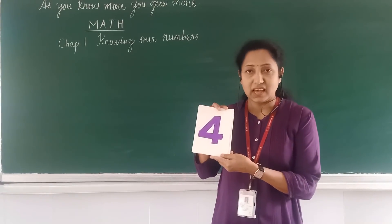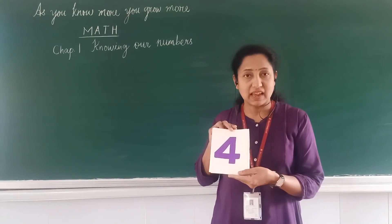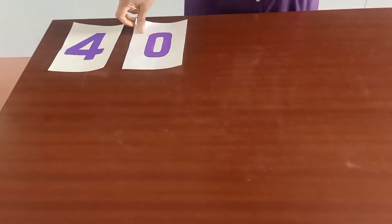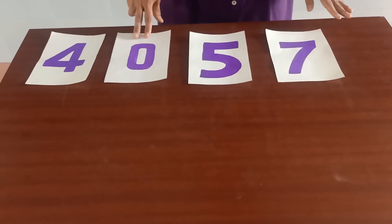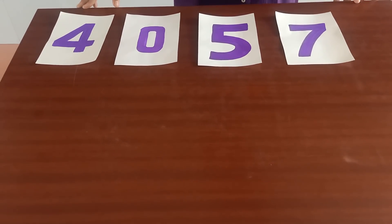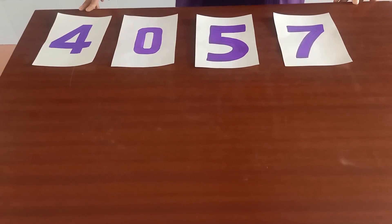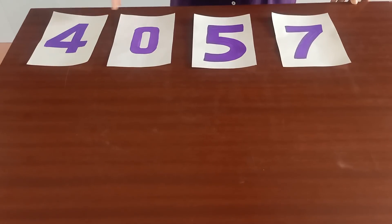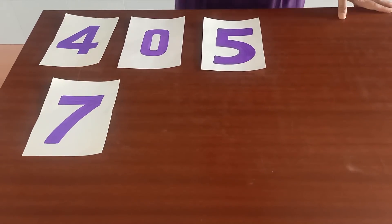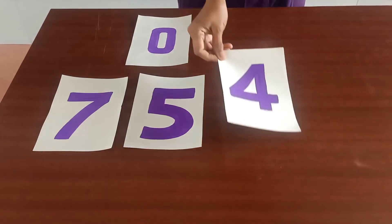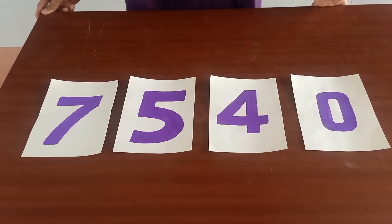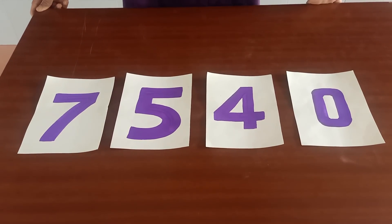I have number cards here. I am going to arrange them on the table, so just have a close look. I have the digits 4, 0, 5, and 7. These are the 4 digits given to you to form the greatest 4-digit number. Amongst these, which is the greatest digit? Yes, it is 7. After that it goes 5, 4, and 0. You have already formed the greatest 4-digit number: 7,540.